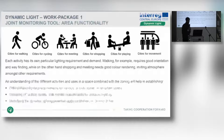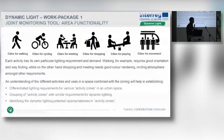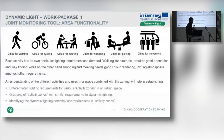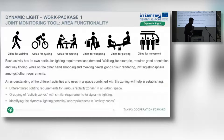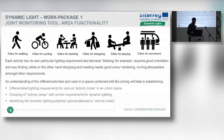Starting with data functionality: public spaces are meant for walking, cycling, shopping, meeting, discussing, and moving, and each activity has its own lighting requirements. For example, walking needs good orientation and wayfinding, whereas shopping requires good colour rendering and an inviting environment. If we understand these activities, we can differentiate or group the different lighting requirements together.